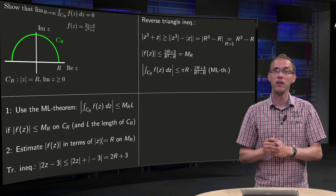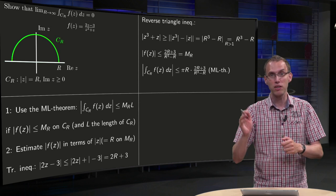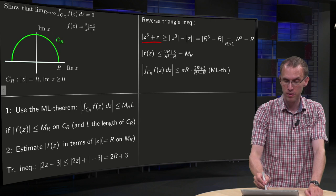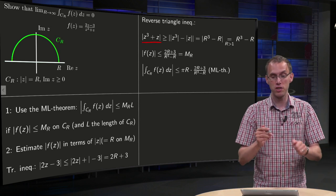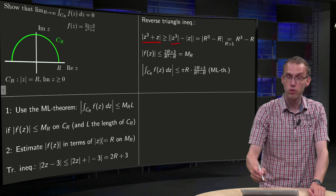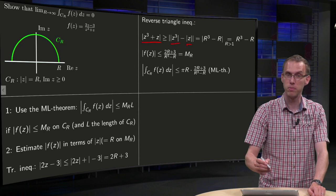Now for the denominator, we have to make that bigger than something, so we have to use the reverse triangle inequality. Norm of z cubed plus z is bigger or equal than absolute value of norm of z cubed minus norm of z.